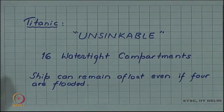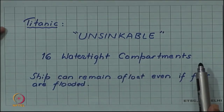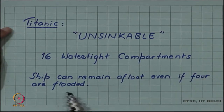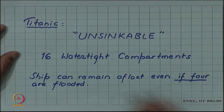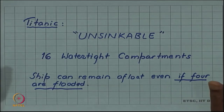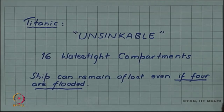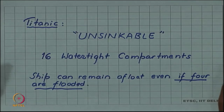It was called unsinkable because of a special design which had 16 watertight compartments in its hull. The design was such that even if four of these compartments are flooded, the ship will not sink. The compartments are watertight such that if one compartment is flooding, the water will not leak into the other compartment. Even if four compartments simultaneously get flooded, the ship will still be floating.